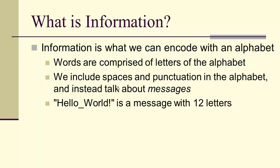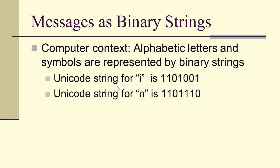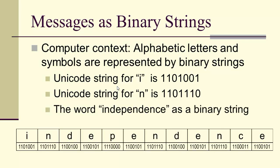Very simply, information is what we can encode with an alphabet. Words are comprised of letters, but to enable communication we also include spaces and punctuation, so we talk about messages. 'Hello world' is a message with 12 letters. The simplest alphabet is the binary alphabet of ones and zeros, and we can represent messages as binary strings using Unicode, where each letter has a binary string representation. So the word 'independence' can be written as a binary string in Unicode.